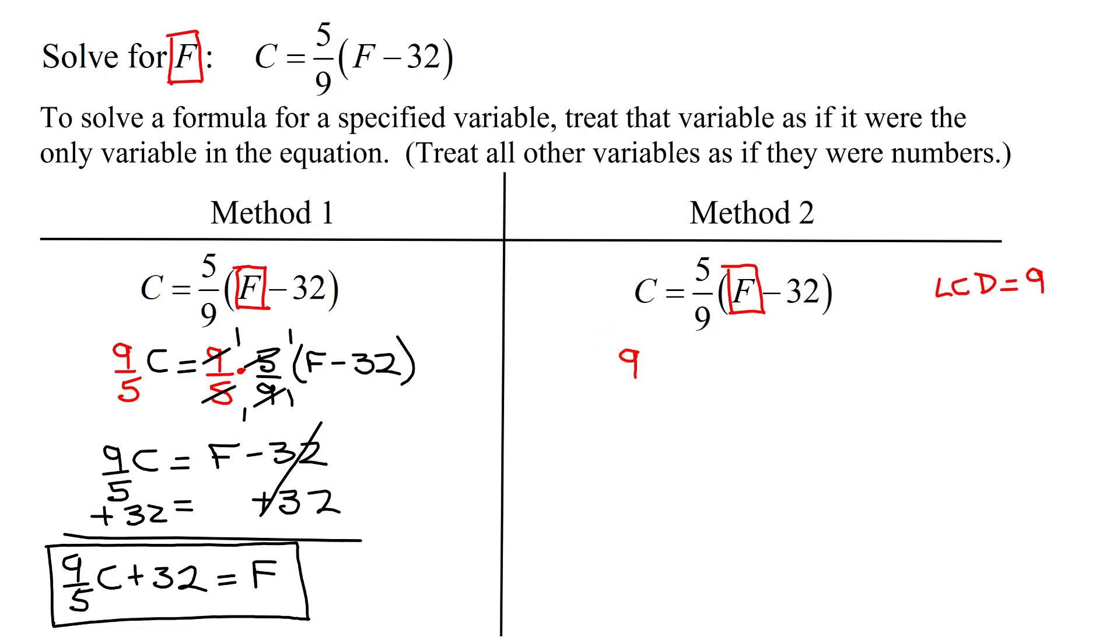And I'm going to multiply both sides of this equation by 9. So I get 9 times C equals, since 5 ninths is a fraction, I'm going to turn my 9 into a fraction by dividing it by 1. So I have 9 over 1 times 5 ninths times the quantity F minus 32.